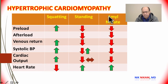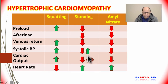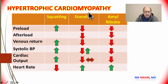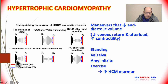In patients who are standing or administered amyl nitrate, there is decreased venous return leading to decreased preload, decreased cardiac output, and increased heart rate. These situations increase the gradient across the left ventricular outflow tract in a patient with hypertrophic cardiomyopathy. Here is the murmur of a patient with hypertrophic cardiomyopathy during various stages, compared with a patient with aortic stenosis.